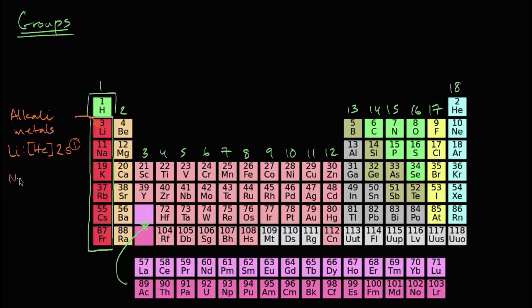What about sodium? Well, sodium is going to have the same electron configuration as neon. And then it's going to go 3s1. So once again, it has one valence electron, one electron in its outermost shell.